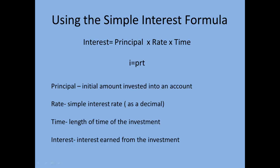The interest rate always has to be used as a decimal. They'll give it to you as a percent, and you're going to have to convert it. T stands for time, and that's the length of the time of an investment. Generally it'll be in years, but use the length of time in terms of what it says in the problem. When you multiply the principal times the rate times the time, you'll get the interest — the amount of money you would earn on investing.